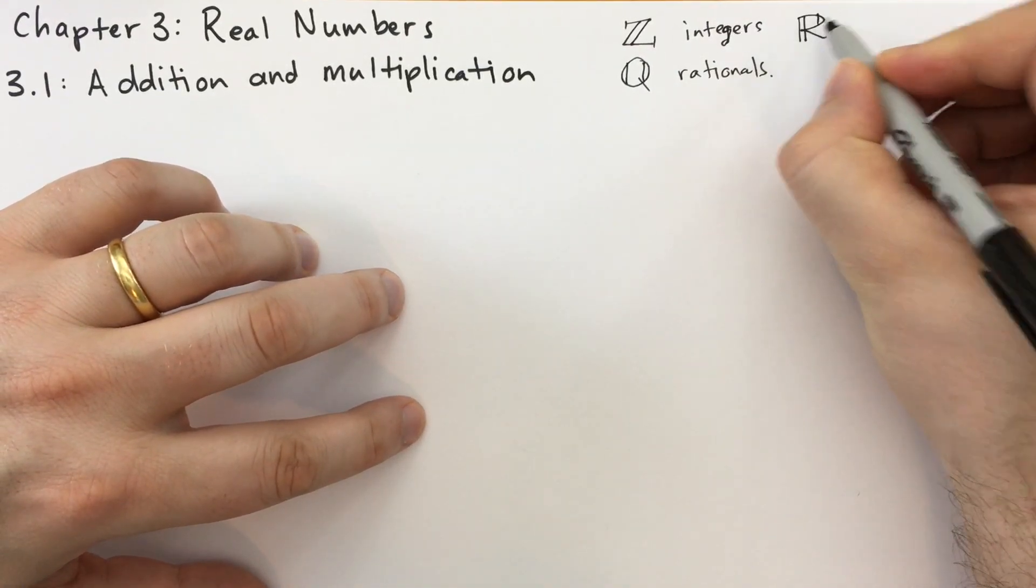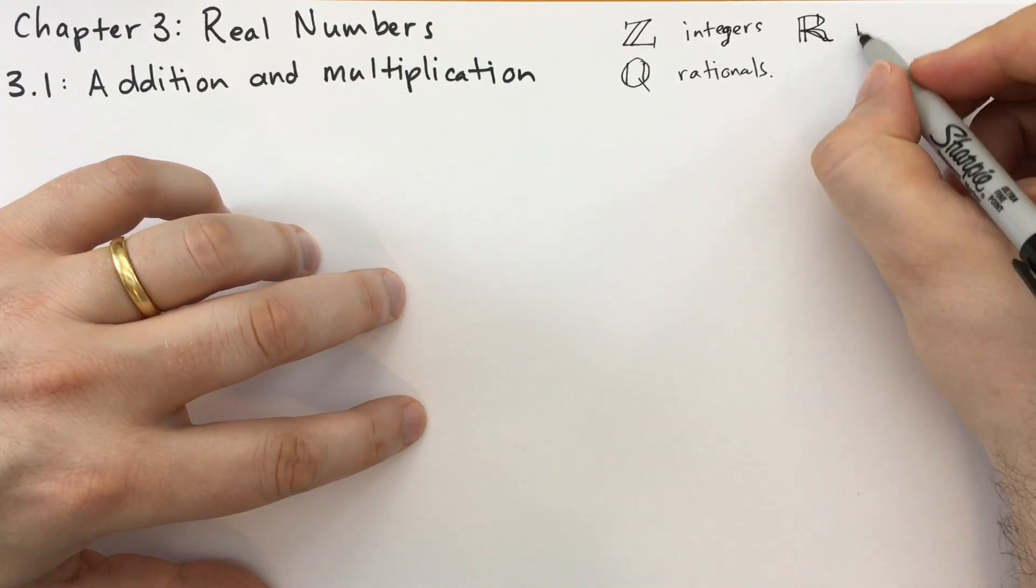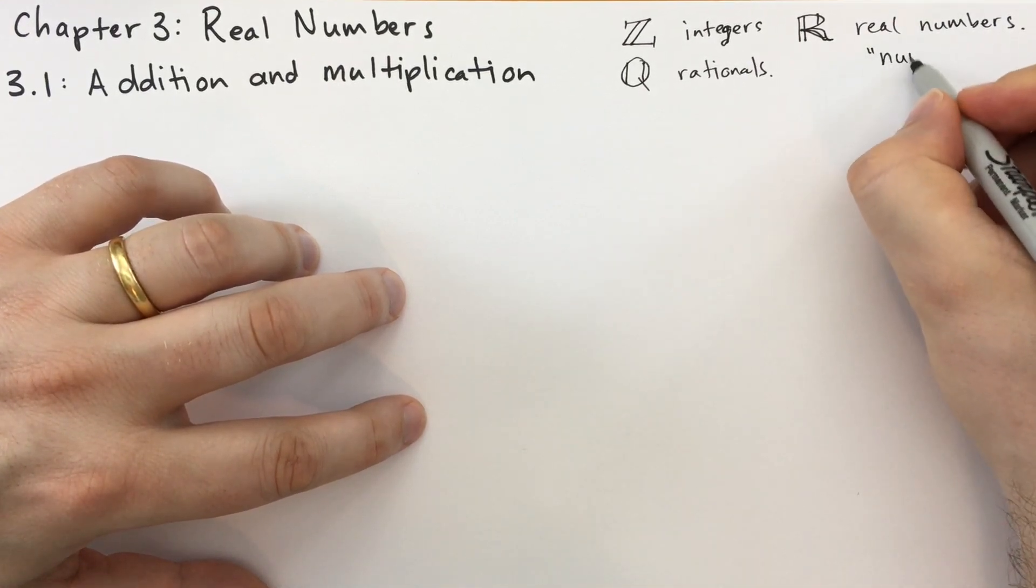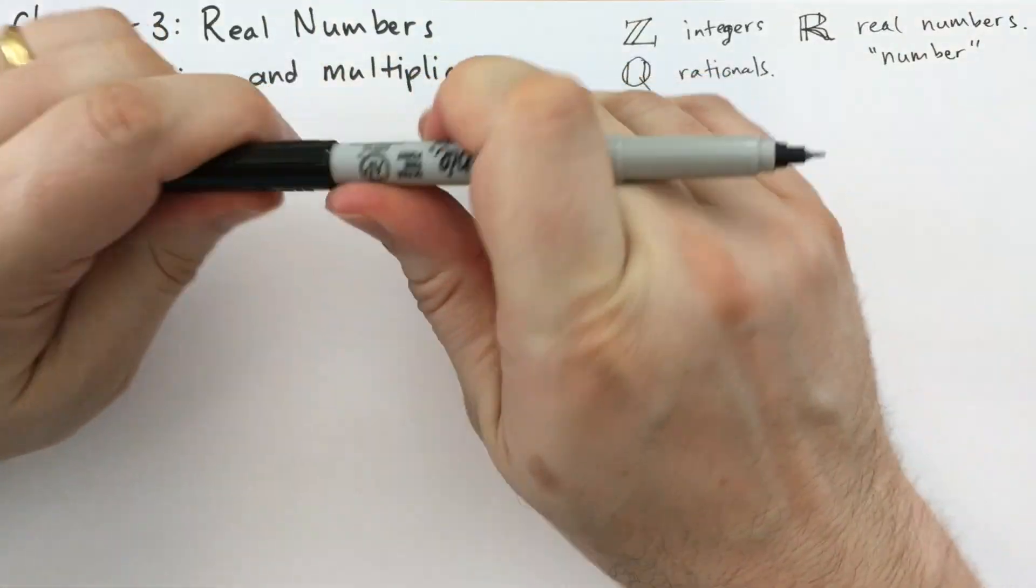Let's see if I can do this right. That's terrible. The real numbers. And from now on, we're just going to call these numbers. So when I say number, I'm going to mean a real number.